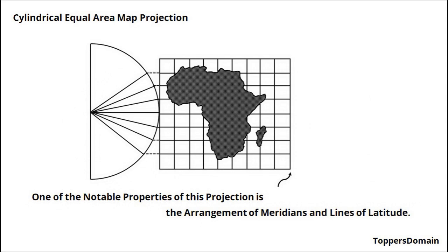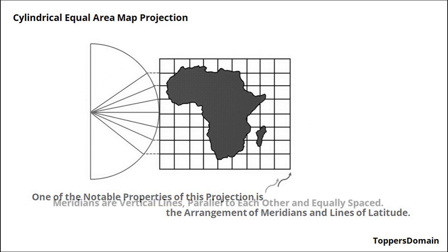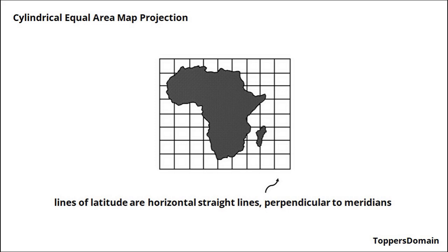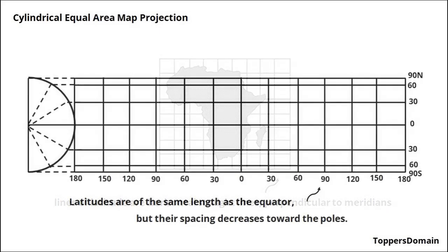One of the notable properties of this projection is the arrangement of meridians and lines of latitude. The meridians are depicted as vertical lines, parallel to each other, and equally spaced. On the other hand, lines of latitude are horizontal, straight lines perpendicular to the meridians. While they have the same length as the equator, their spacing decreases as they approach the poles.